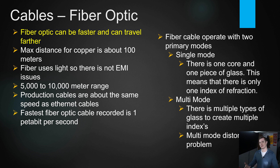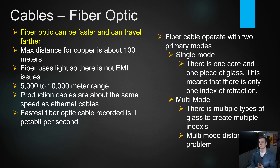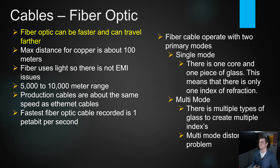Fiber optic is based on glass and light. The main disadvantage is it can't carry power, but the advantages are significant: it's much faster and can travel much farther. Copper cable tops out around 100 meters before attenuation becomes an issue; fiber optic can go about 5,000 to 10,000 meters depending on equipment. For modes: single-mode has one glass core and one index of refraction, meaning only one stream of traffic at a time — but it's cheaper and can be faster because there's less processing.